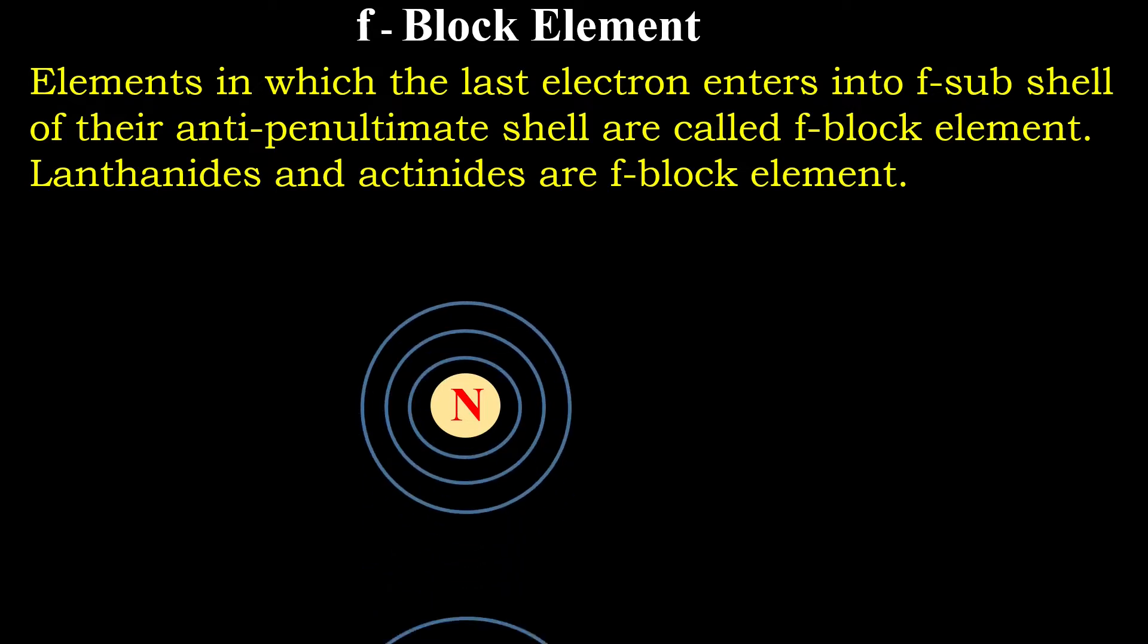Orbits may be one or more. One, two, three, four, five, six, seven. And these orbits are also named as K, L, M, N, O, P, Q.